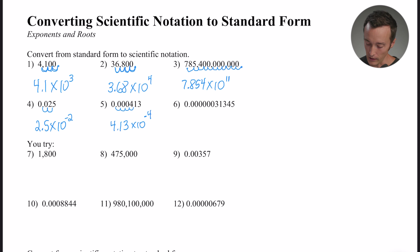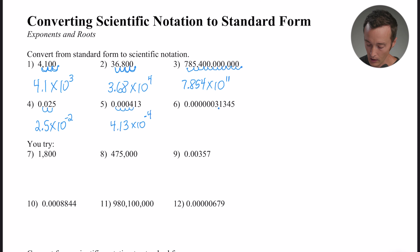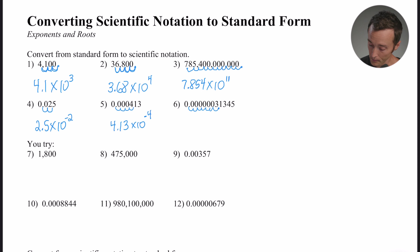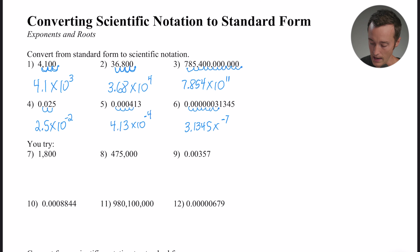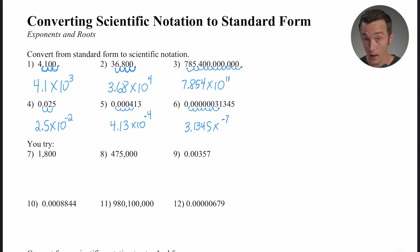For number six, glancing at it, the decimal has to land between the first three and the one, making it 3.1345. Counting the places: one, two, three, four, five, six, seven places. The lead number is 3.1345 and I moved it seven places. Since it's a very small number, the exponent is negative seven — 3.1345 times 10 to the negative seventh. Go ahead and try numbers seven through twelve on your own.